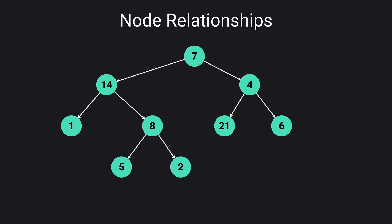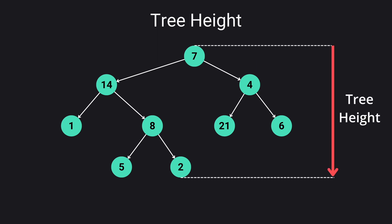Another property of a tree is tree height which is the length of the longest path from the root to the leaf.